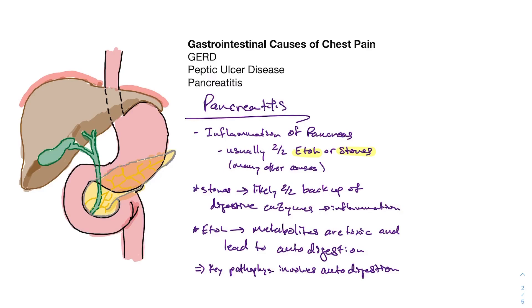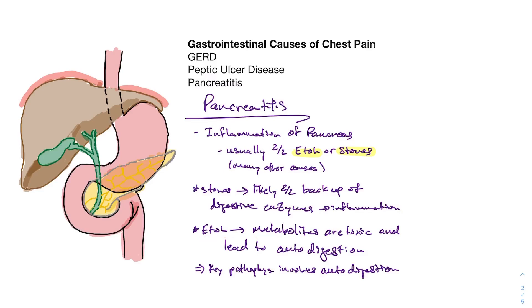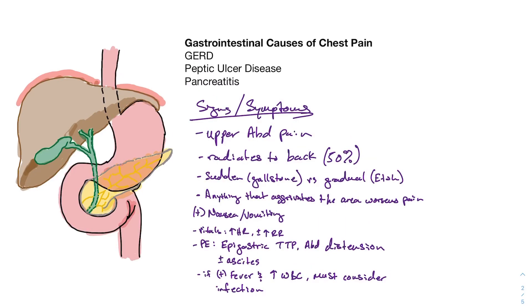Pancreatitis caused by stones is secondary to backup of digestive enzymes causing inflammation and autodigestion. Alcohol metabolites are toxic, also leading to autodigestion. There are many other causes, but stones and alcohol are the most common. Signs and symptoms include upper abdominal epigastric pain that typically radiates to the back about 50% of the time. The onset depends on the cause: gallstone obstruction causes sudden pain, while alcohol-related pancreatitis causes more gradual pain.